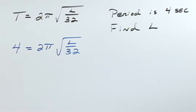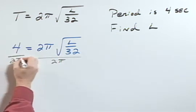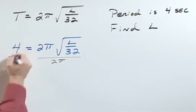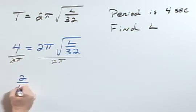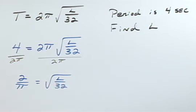Let's start by dividing both sides by 2π. So this will be 2/π = √(L/32).